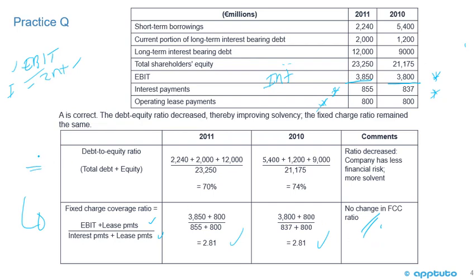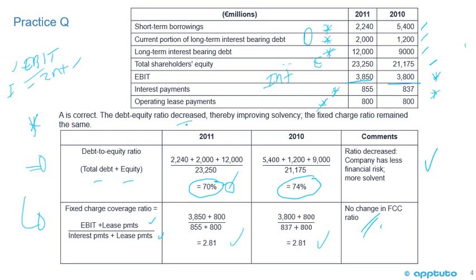Now the debt-to-equity ratio: total debt divided by total equity. For 2010: short-term borrowings of $5,400 plus $1,200 plus long-term debt of $9,000, divided by equity of $21,750, rounds to 74%. For 2011: $2,240 plus $2,000 plus $12,000, divided by $23,250, gives 70%. So the debt-to-equity ratio decreased, meaning the company has less financial risk and is more solvent. Answer A is correct — the debt-to-equity decreased, thereby improving solvency. That's the last slide for this LOS.